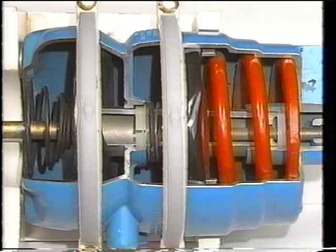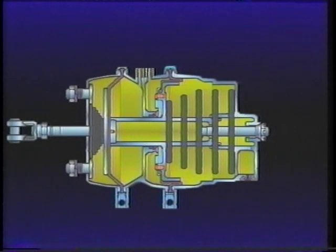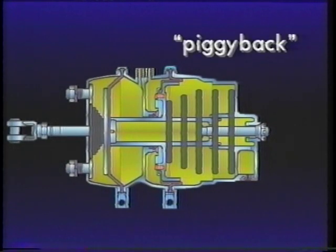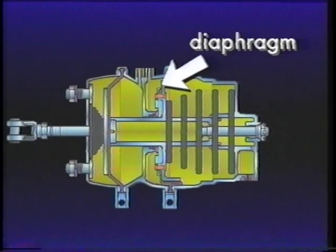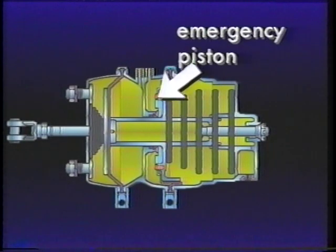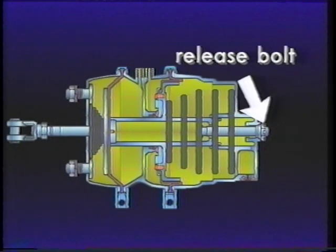The spring brake acts as the service brake on the rear axle and performs the additional function of emergency and parking brake. The rear portion, sometimes called the piggyback, has a powerful spring, diaphragm, emergency piston, emergency air inlet port, and release bolt.